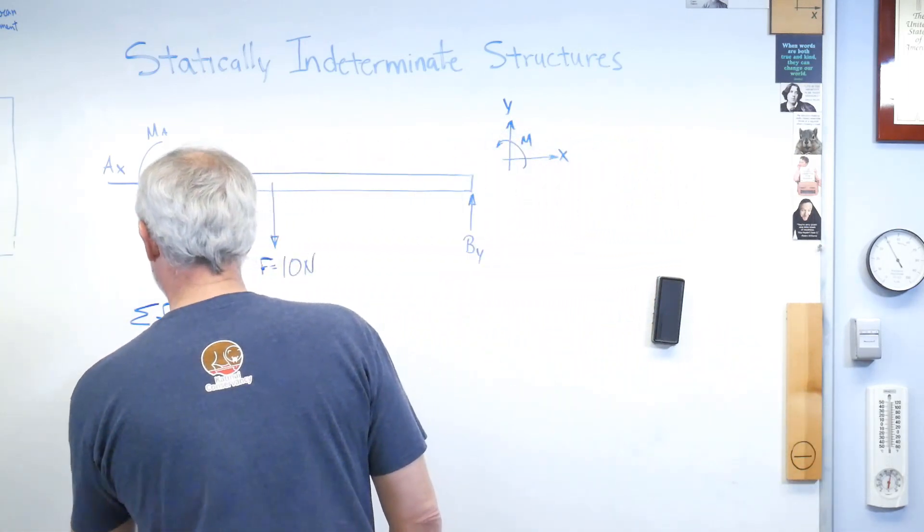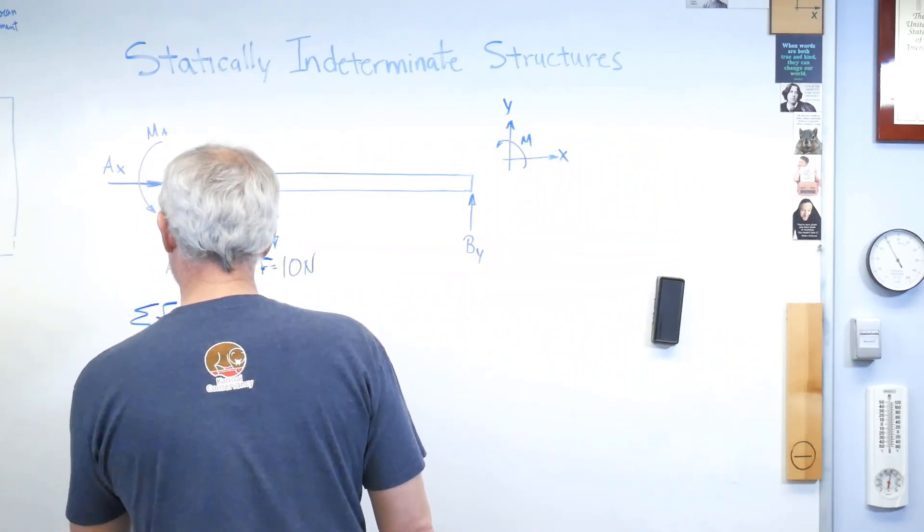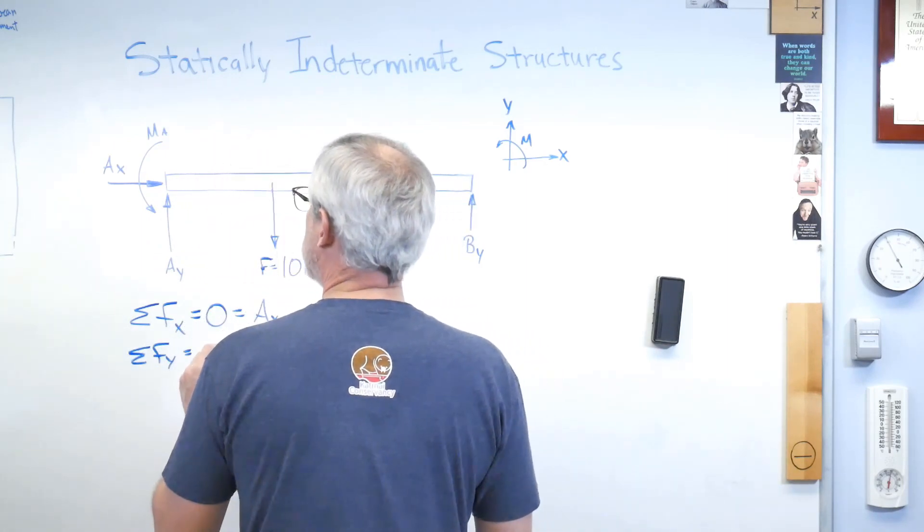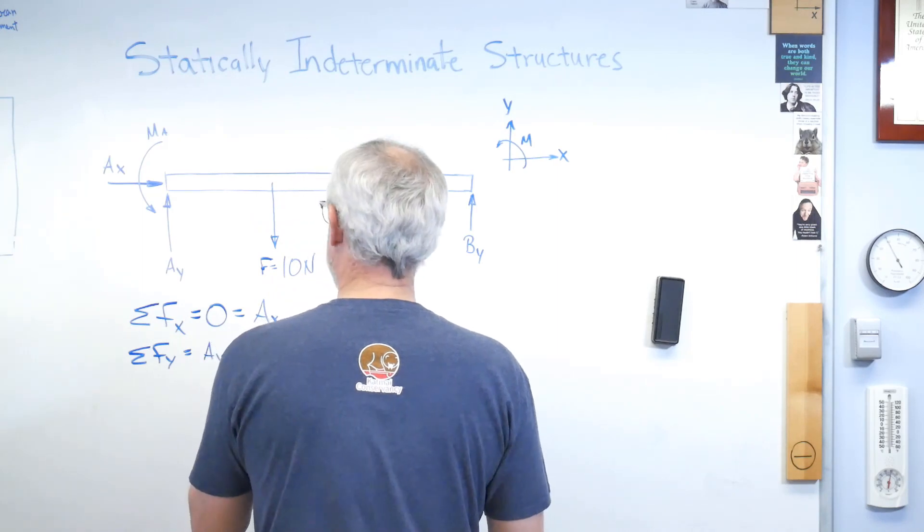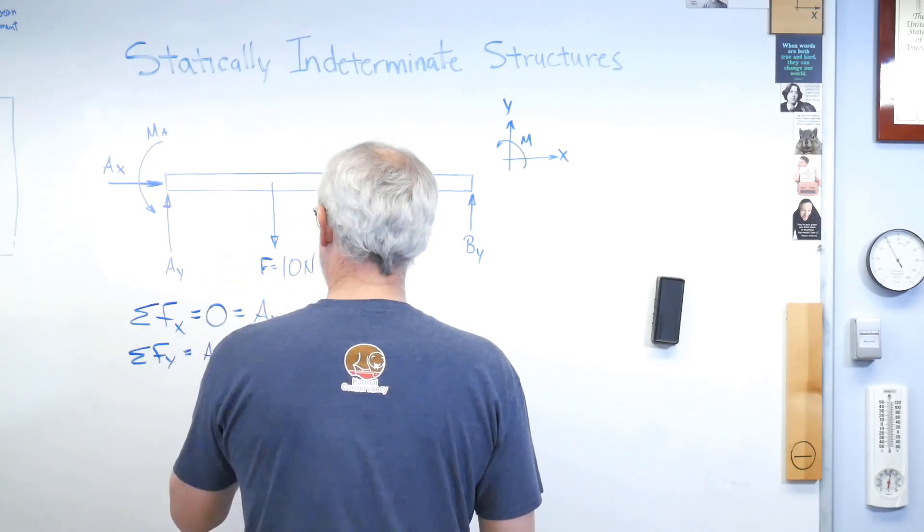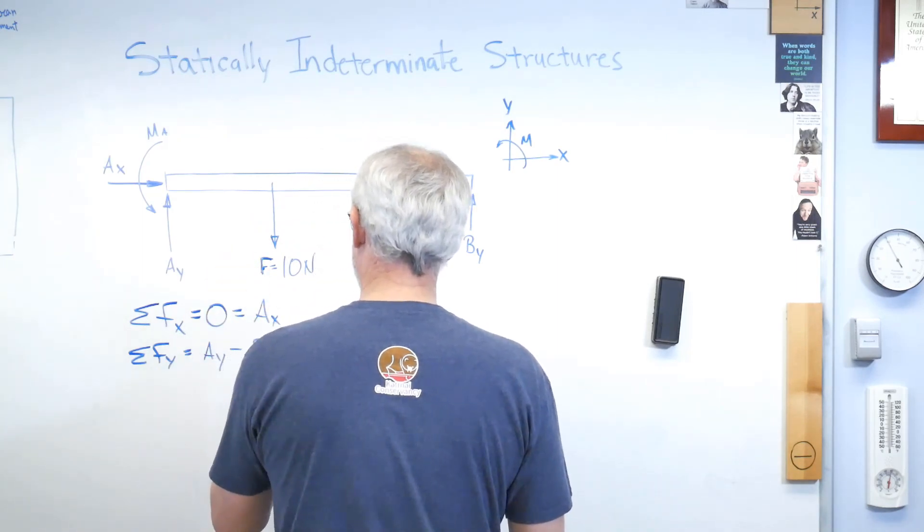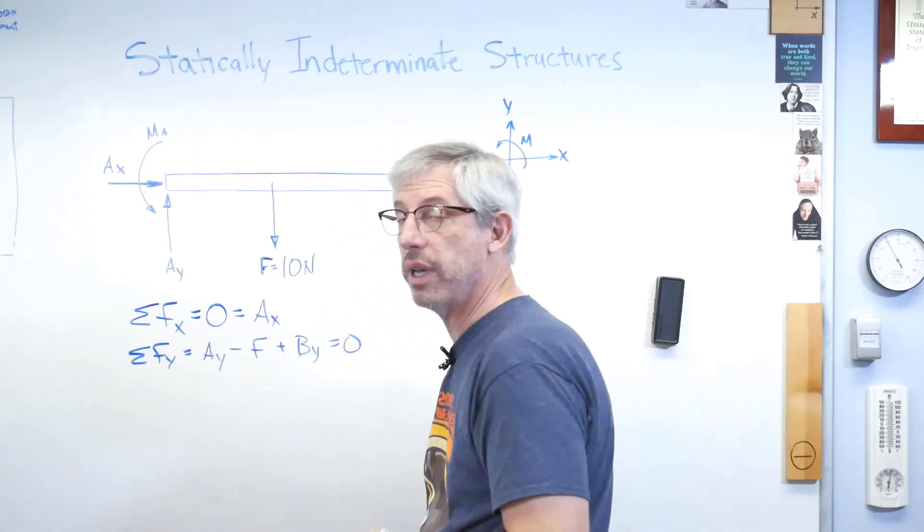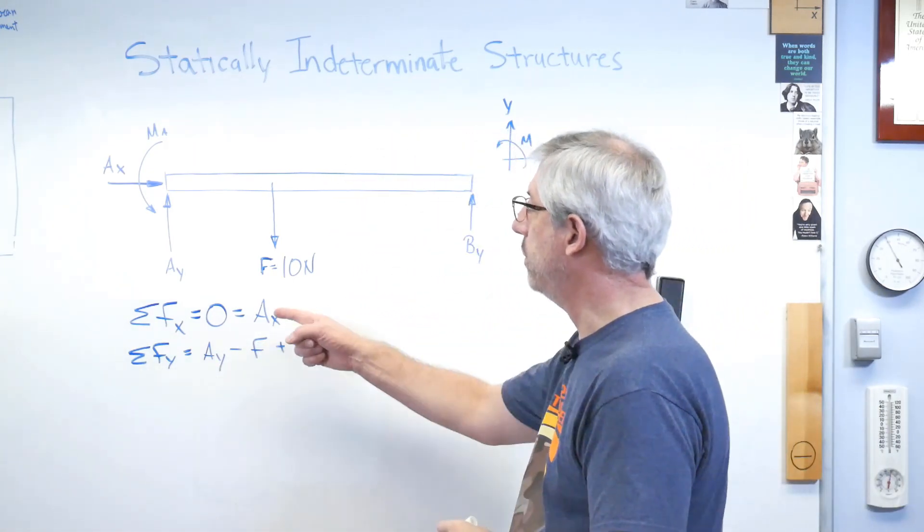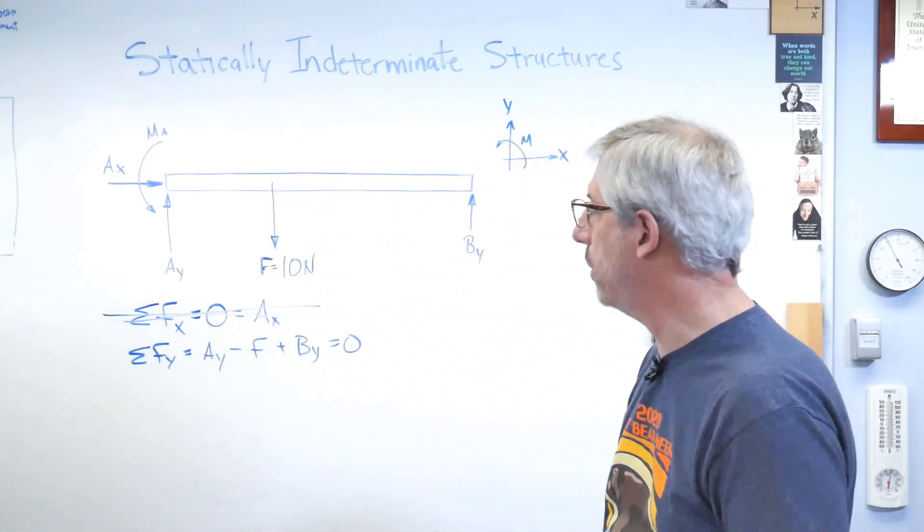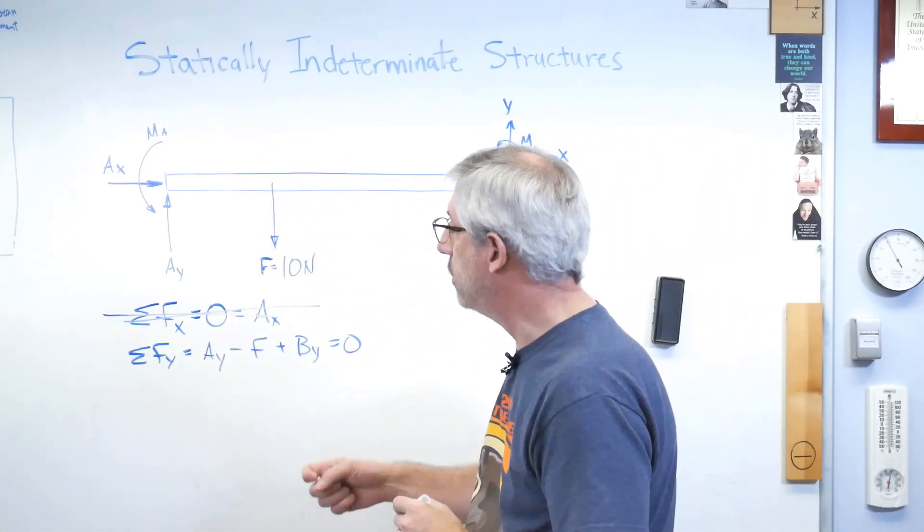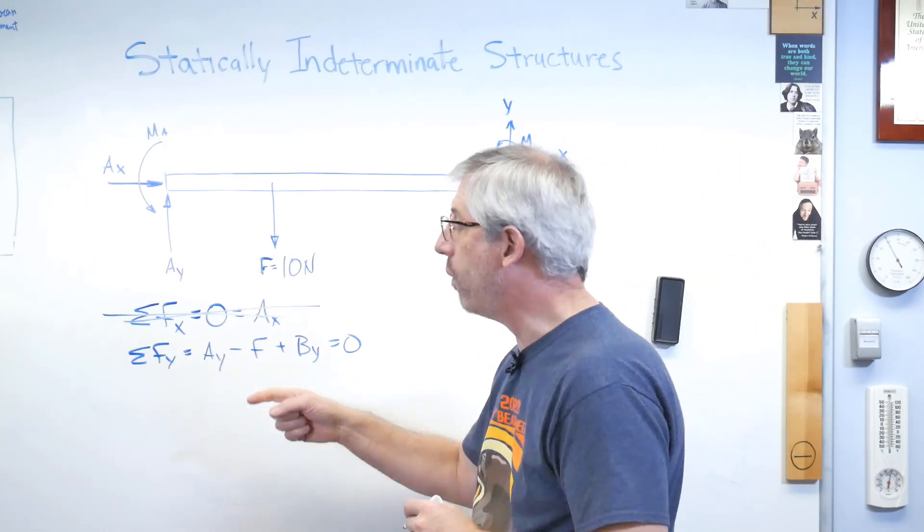Sum of the forces in the y-direction: I've got Ay minus F plus... I can clean that up... By equals zero. So there's two things I don't know. Well, there's three things I don't know. This one I don't know, but this equation is irrelevant, so I'm going to cross that out. So right now I've got two things I don't know—Ay and By—and I've only got one equation.